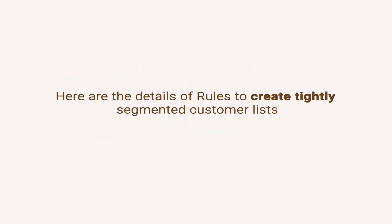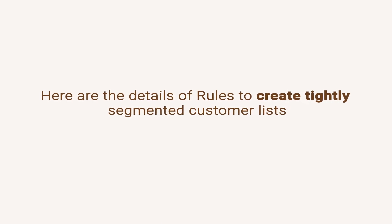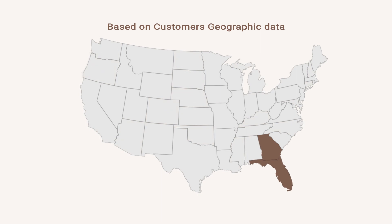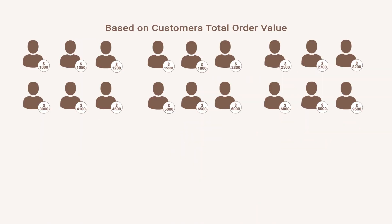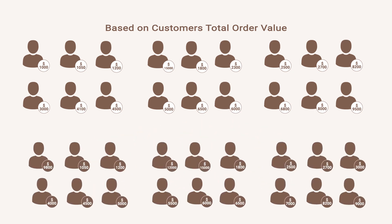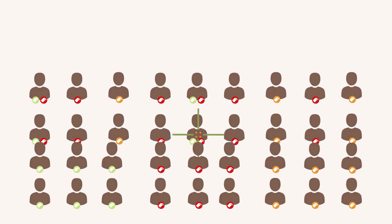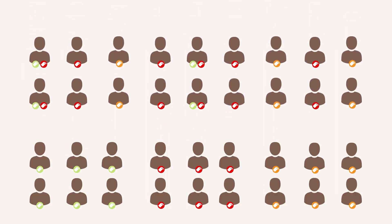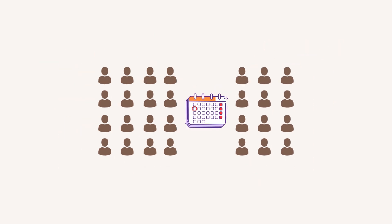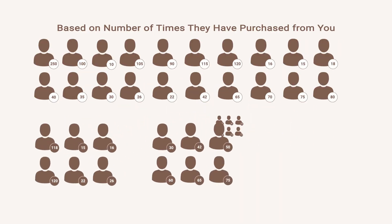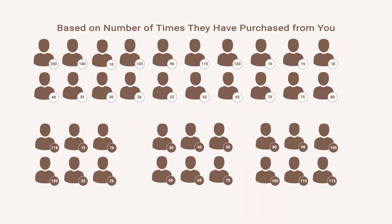You can create other multiple lists based on rules and sync customers instantly. Here are the details of rules to create tightly segmented customer lists: list of customers by state, region, or country of shipping address; by total order value range; by order tags; by date range of their orders; and by number of times they have placed an order with you.